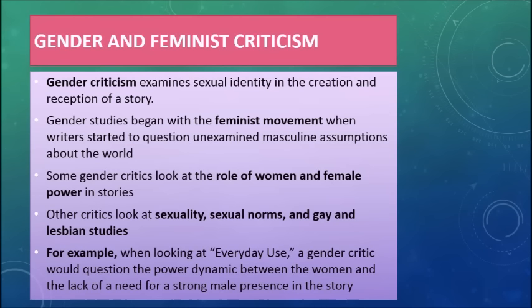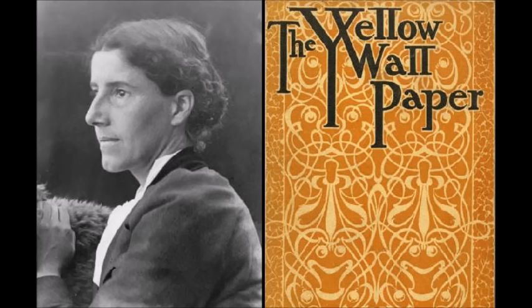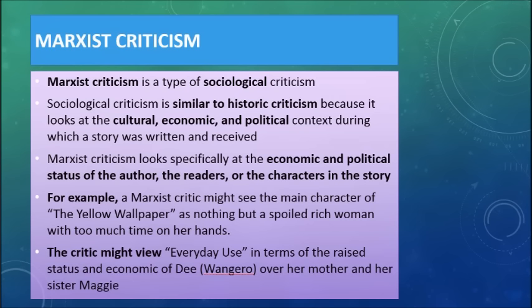Gender and feminist criticism identifies sexual identity in the creation and reception of the story. A lot of gender studies began in the feminist movement in the 1970s, when writers started to question and examine masculine assumptions around the world. Some critics also look at women, the role of women, and female power in these stories. Eventually this leads to looking at sexual norms and gay and lesbian studies. For example, here's a still from the Yellow Wallpaper — what is the role of female empowerment in that story? How did the author feel about women who have or don't have power, and how does anyone react when they don't have power?